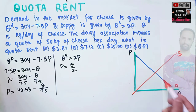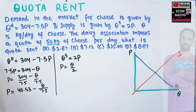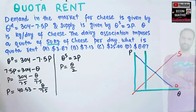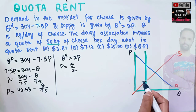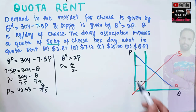Before the imposition of the quota, we produce at the intersection of demand and supply functions. Since a quota of 50 kg of cheese per day is imposed, we will be producing less than the equilibrium outcome. This line on the graph denotes the quota of 50 kg. Corresponding to this quota, we calculate the price consumers will pay and the price sellers will receive — the difference gives us the quota rent.